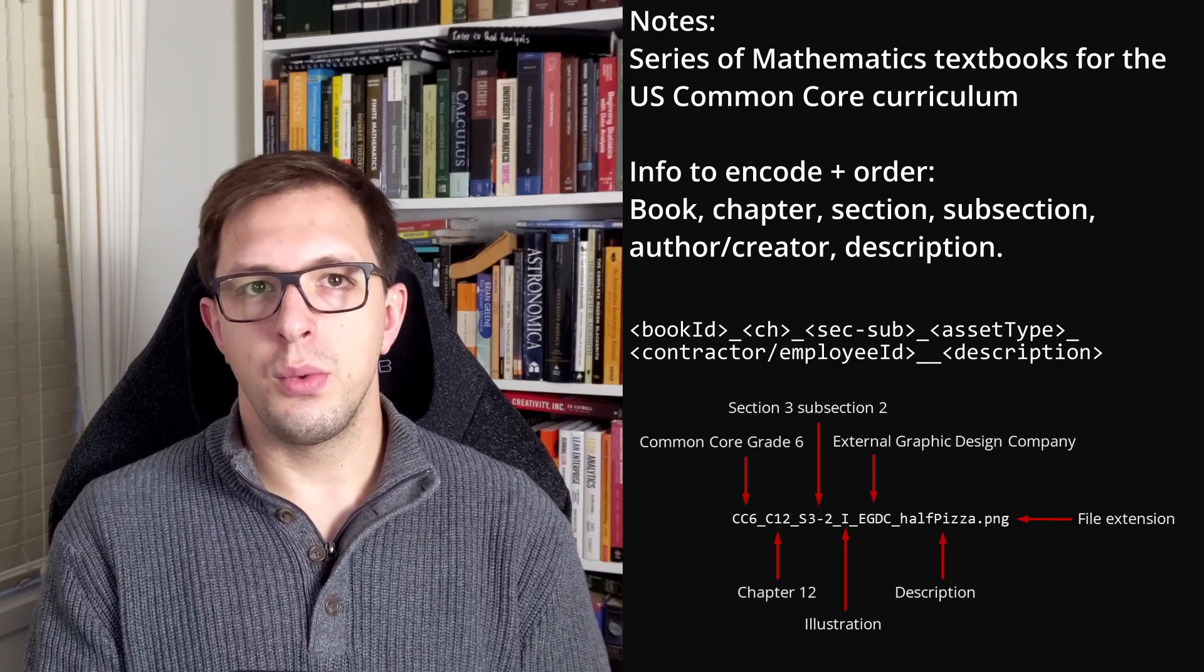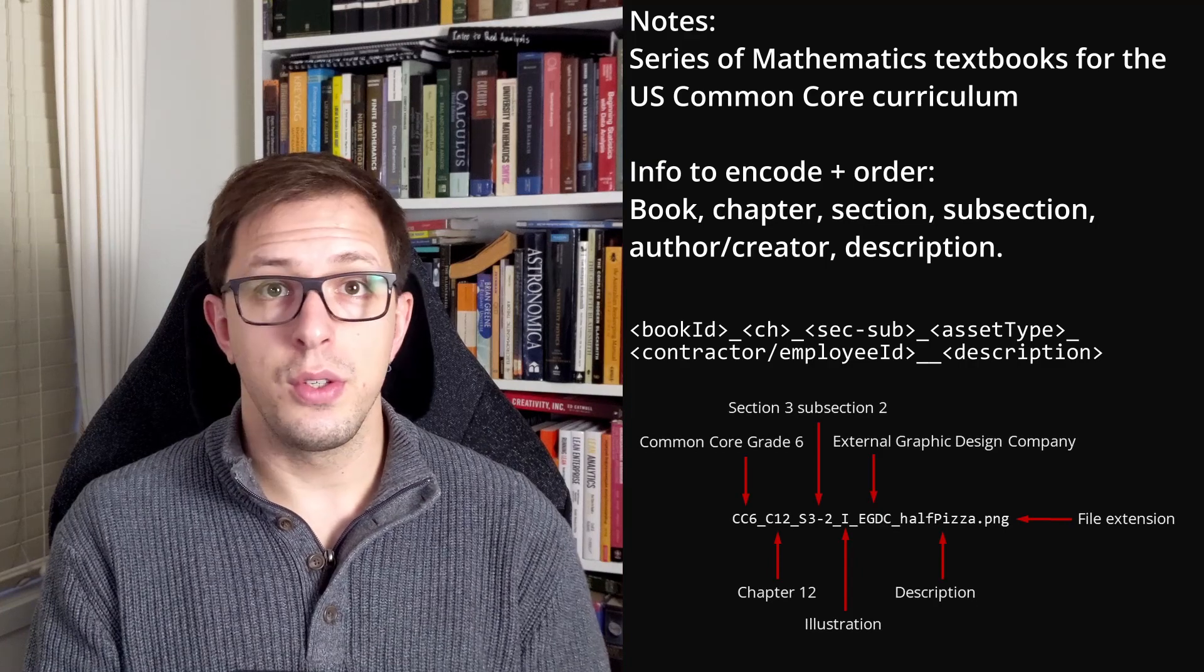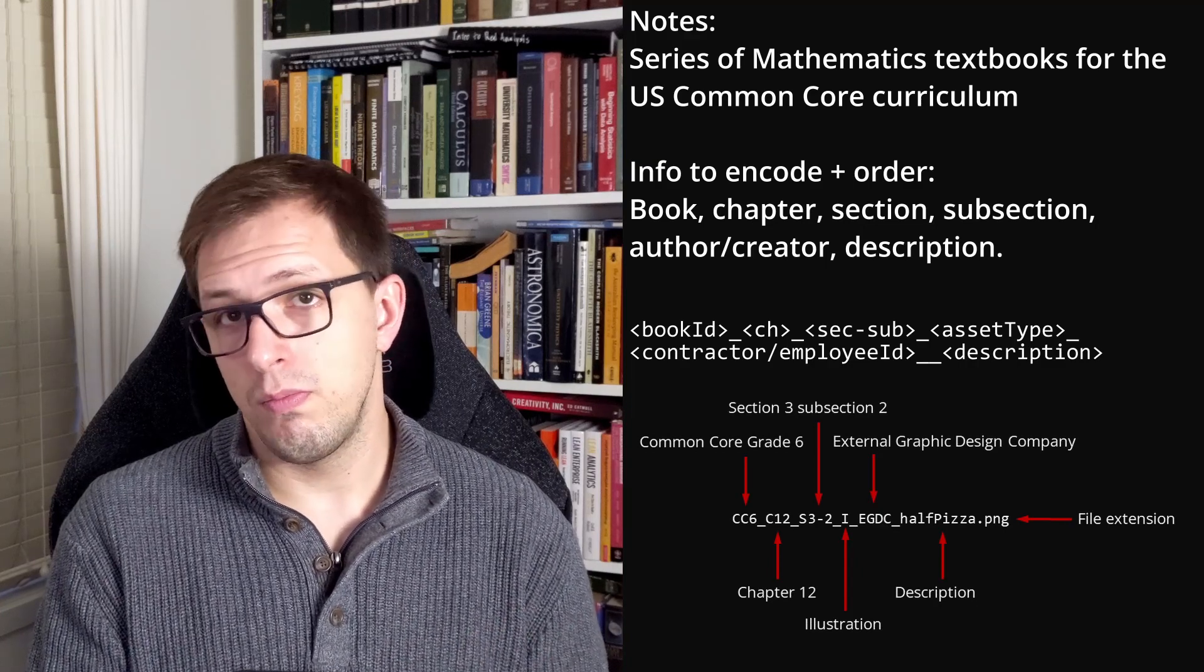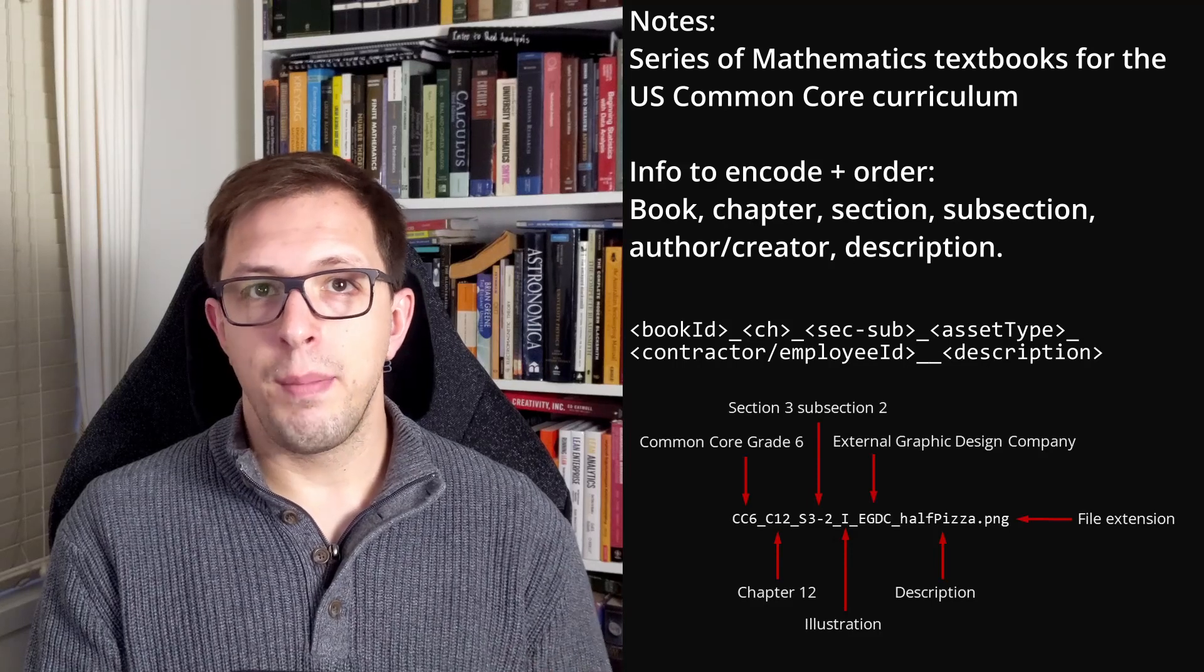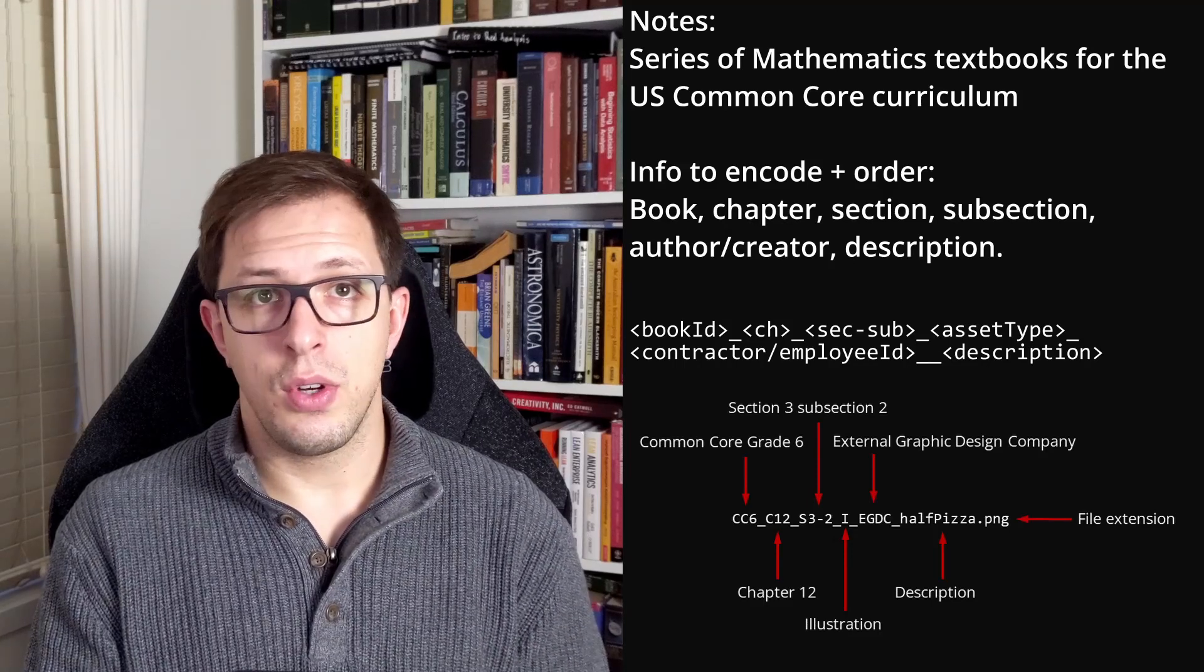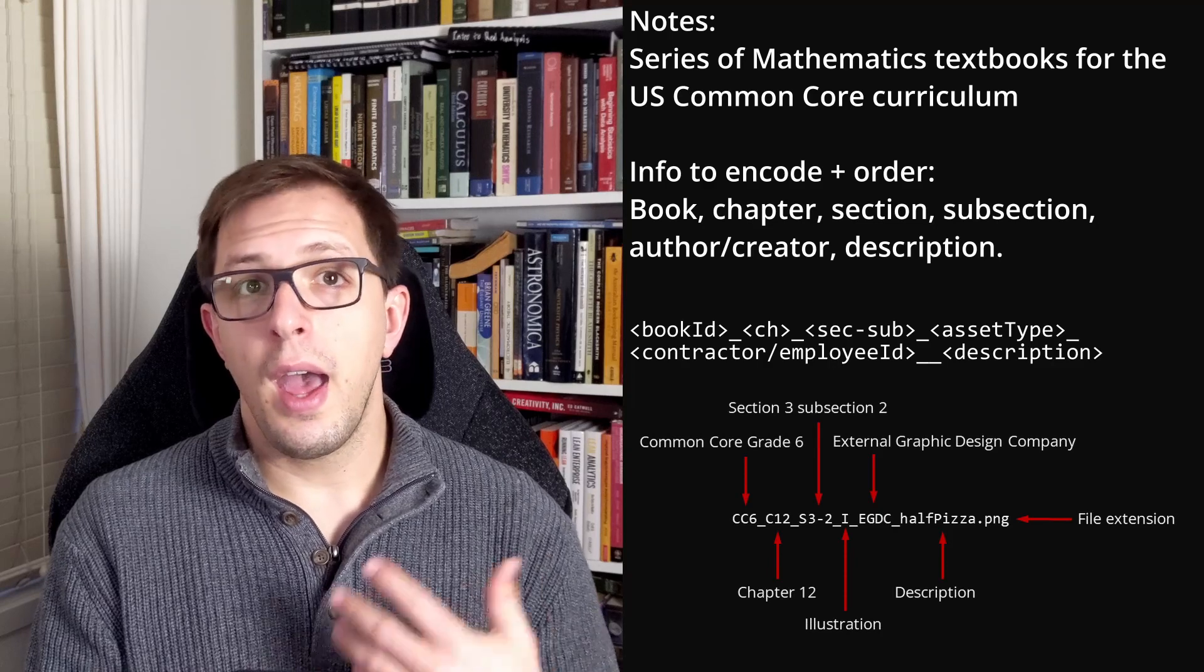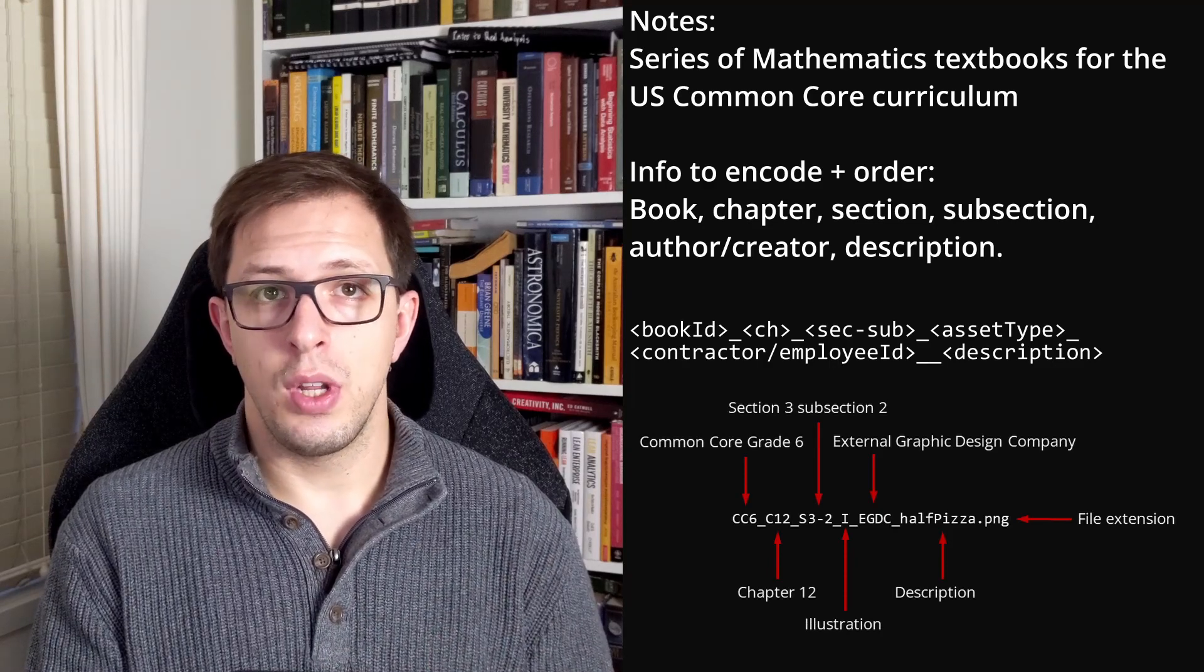Looking at how these files will sort alphanumerically, first this will group all of the assets by book, for example CC6, then by chapter, section, and subsection, and then by asset type, I for illustration, then by the creator, and finally by the content description and the file extension.